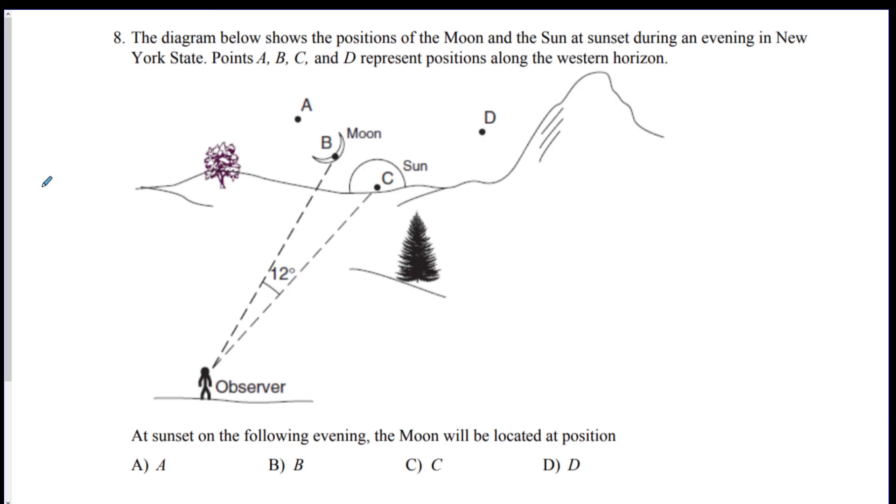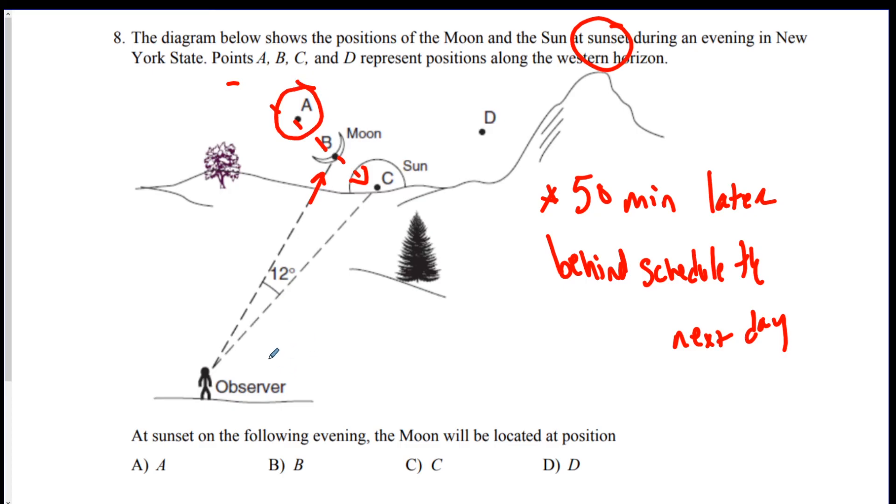And the last question. At sunset on the following evening, the Moon will be located at what position? So right now it's at B. Every day the Moon rises 50 minutes later than usual. So this is showing sunset. So the Moon's sort of going down this way. So the next day, since it rose 50 minutes later, the Moon is pretty much going to be behind schedule the next day. It's running late. That's how you got to think of it. So it's only going to be at A the next day because it rose 50 minutes later. So it's running behind schedule.